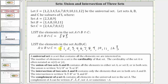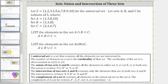Let's look at one more example. Here the universal set S contains integers from one through ten, and sets A, B, and C are subsets of the set S. The first question is to find the elements in the set A intersect B intersect C.